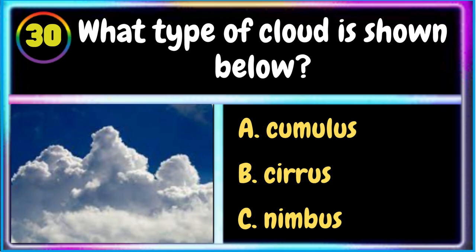30. What type of cloud is shown below? A. Cumulus B. Cirrus C. Nimbus. The correct answer is A. Cumulus.